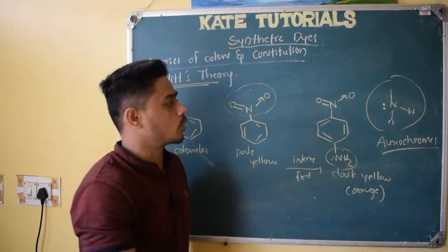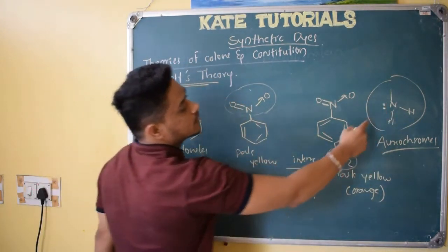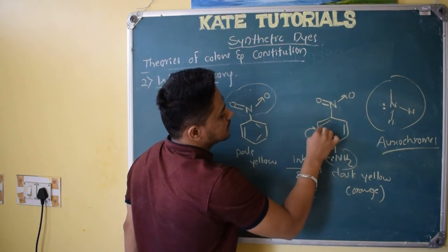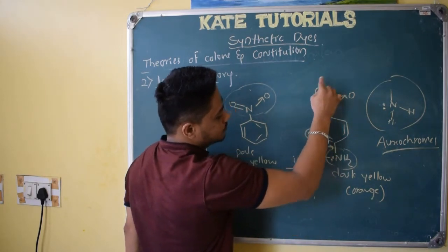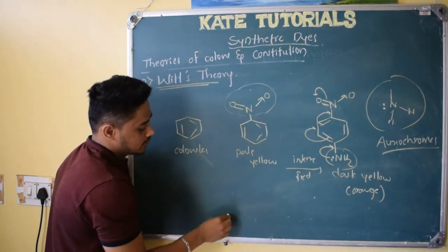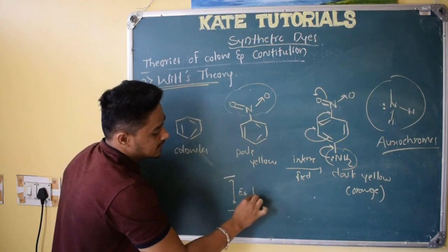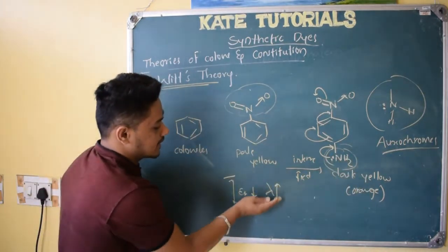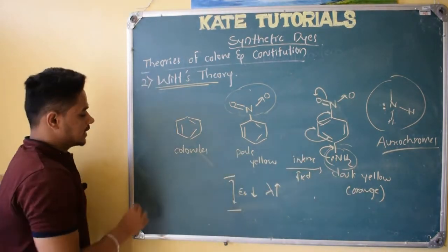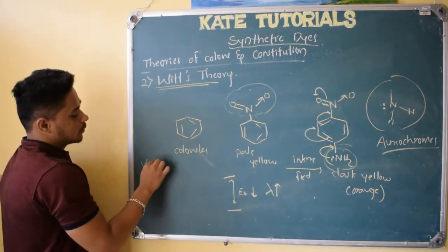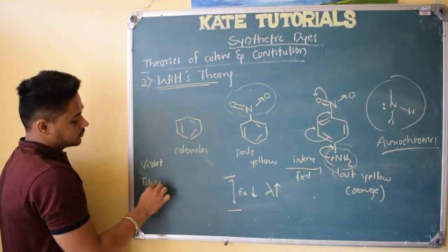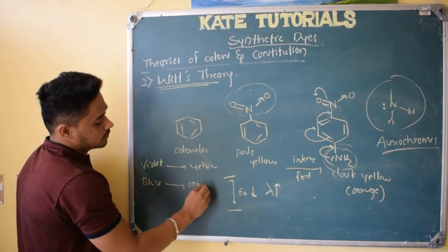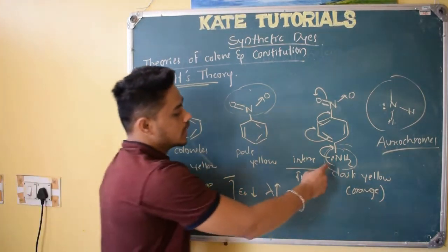Why does it intensify? Because of lone pairs, the NH₂ group does conjugation with the ring system. Because of this conjugation, the difference between HOMO and LUMO decreases further. So as energy decreases, lambda max increases. Initially it was yellow — absorbing violet. Now because of the NH₂ auxochrome, it absorbs blue light, so it becomes orange color. This is how auxochromes intensify the color of chromophores.